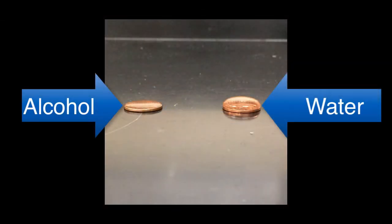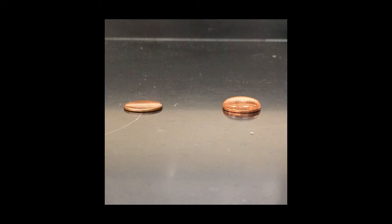This image here shows a penny with drops of alcohol and one with drops of water. And you can see that you can get more drops of water on a penny. And once again, this just illustrates the concept of stickiness, that water particles want to stick together more than alcohol particles.